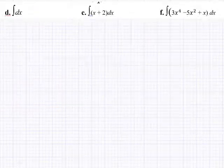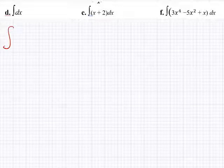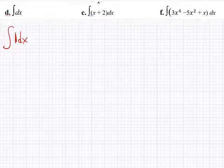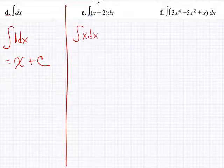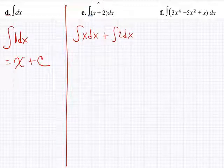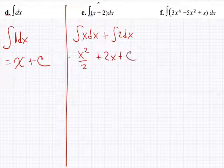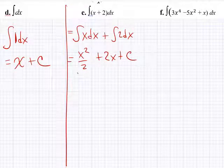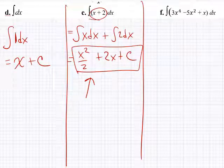Here's one that gives people trouble: the integral of dx. There can always be a 1 here, so it's 1 dx. Ask yourself what you took the derivative of to get 1 — that's x. So the answer is x plus c. For the integral of x plus 2, use the sum rule: split into the integral of x dx plus the integral of 2 dx, giving x squared over 2 plus 2x plus c. Take the derivative of that and you'll get back x plus 2.